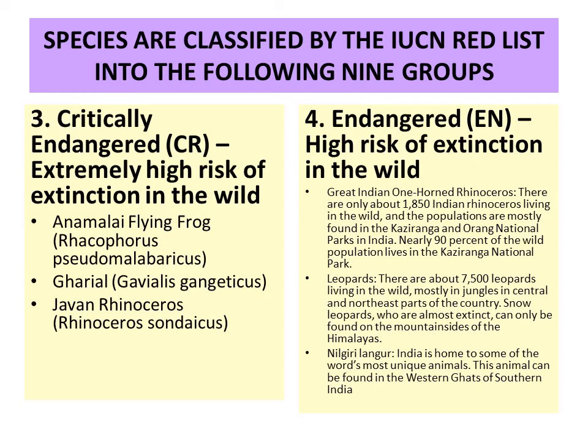Fourth is endangered — a high risk of extinction in the wild. Examples include the one-horned rhinoceros with only about 1,850 individuals present, the leopard with around 7,500 individuals in the wild, and the Nilgiri langur, which is present in very low numbers and faces a high risk of extinction.